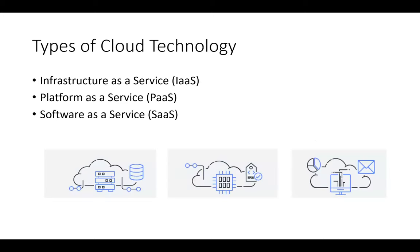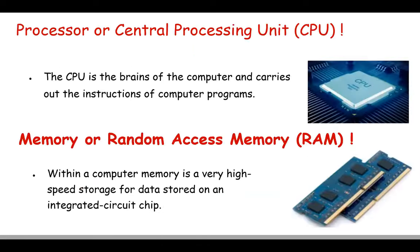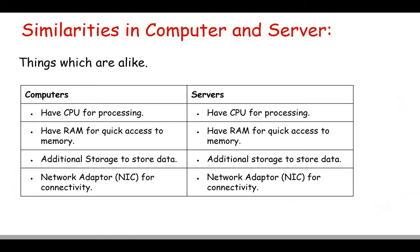There are different types of cloud technologies: Infrastructure as a Service (IaaS), Platform as a Service (PaaS), and Software as a Service (SaaS). These are the three types currently used in infrastructure environments. Before going deeper into cloud computing, let's understand the differences between a computer and a server.